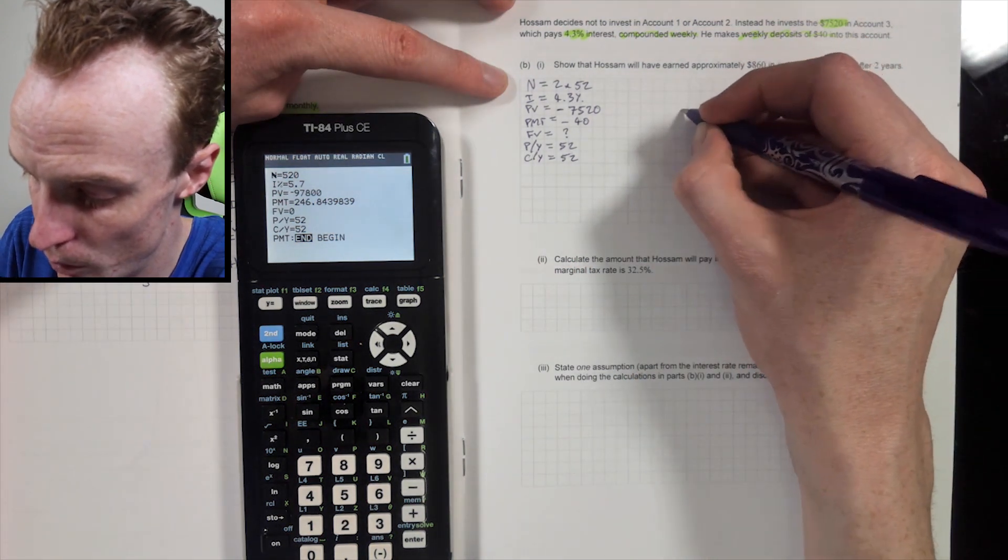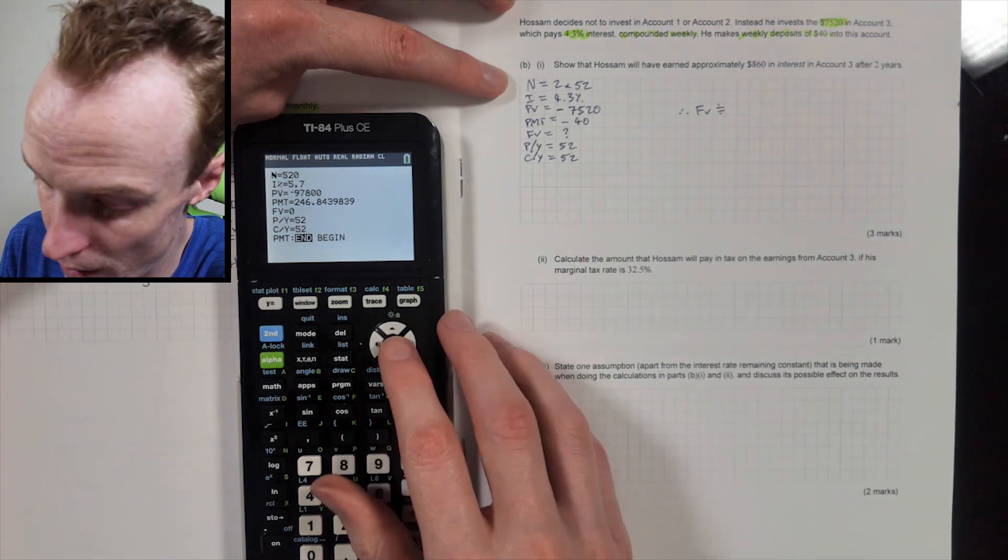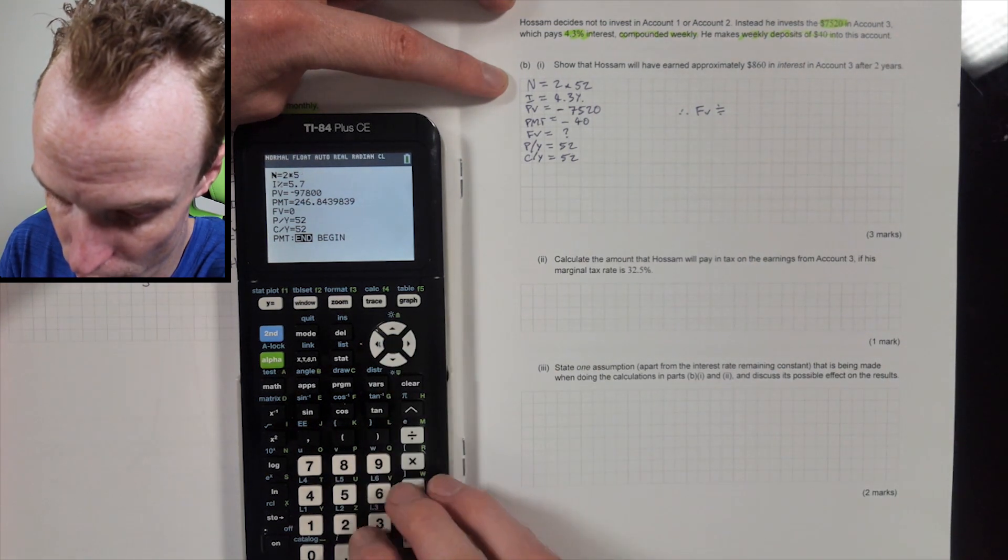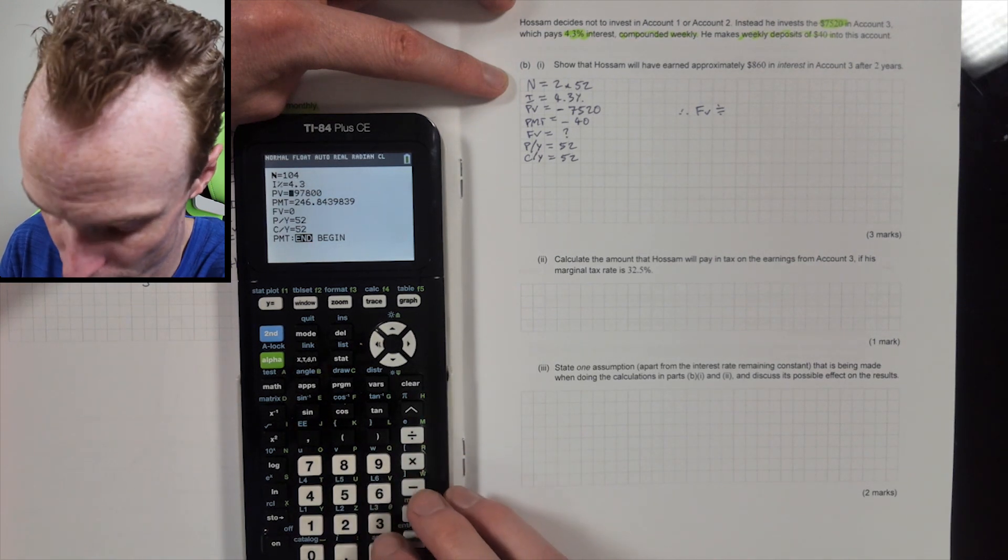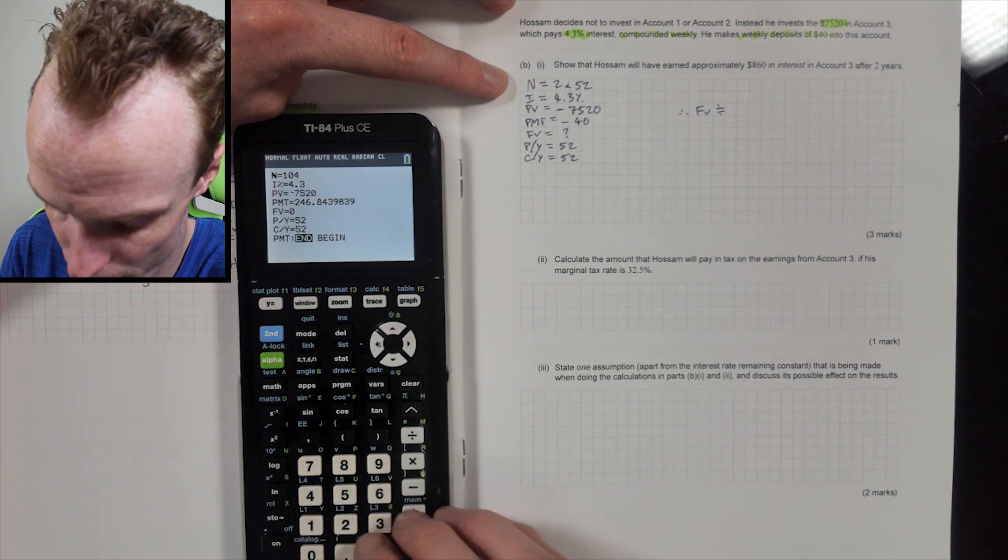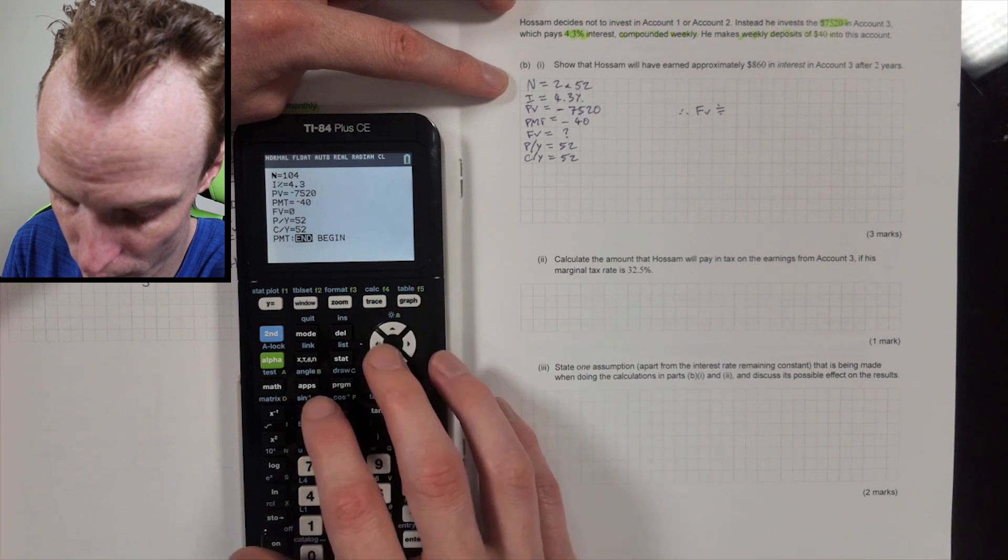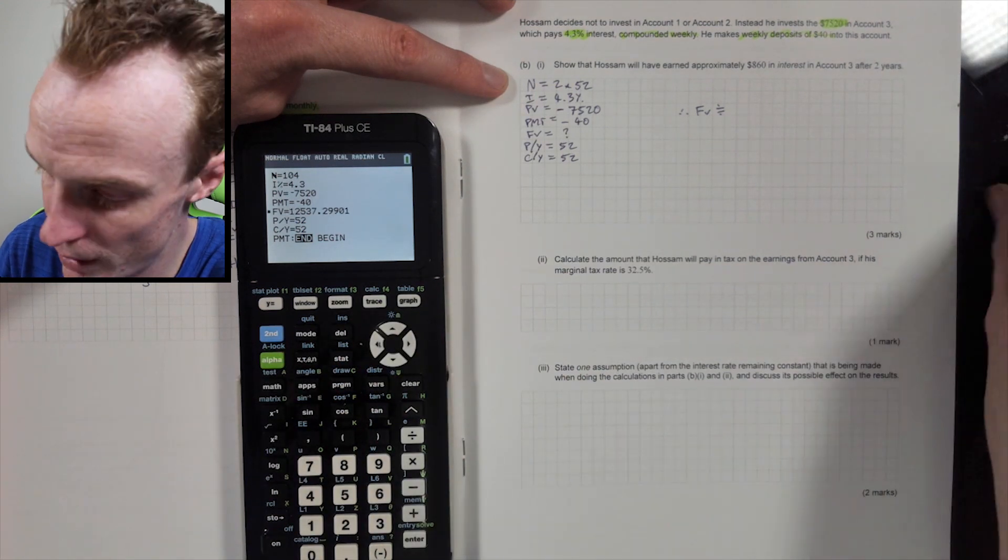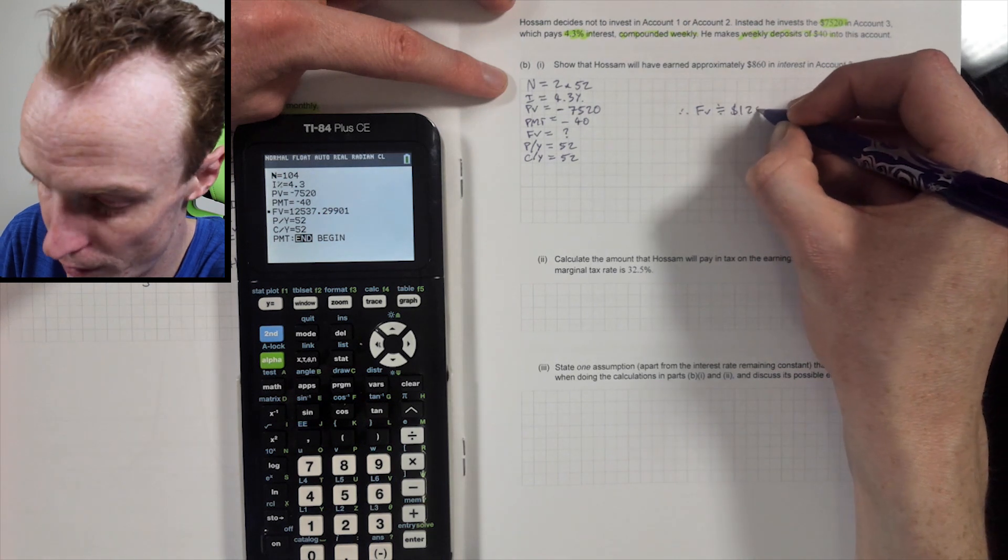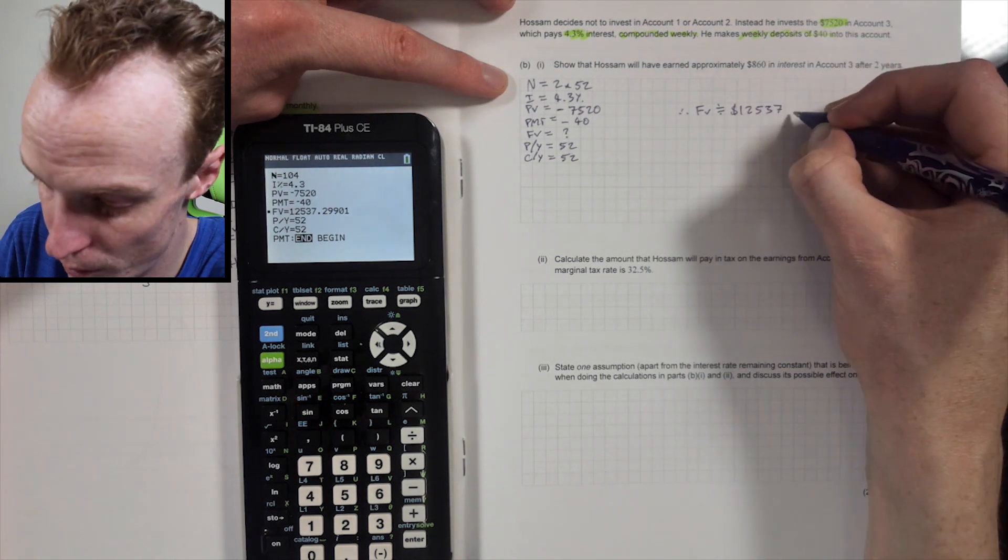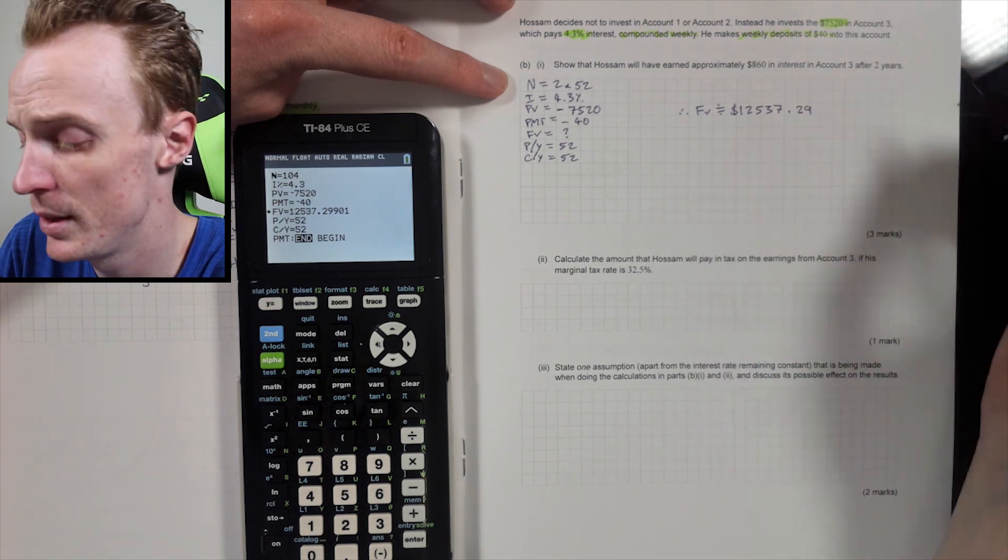So then I'm looking for my future value. So two by 52, 4.3, negative 7,520, negative 40, 52 and 52. So let's solve for that. So it'll be approximately 12,537.29. Now this is my future value.